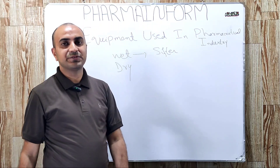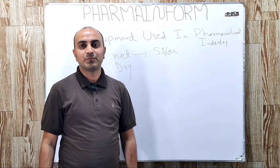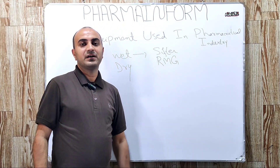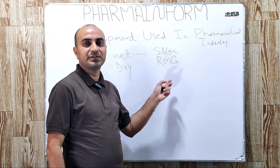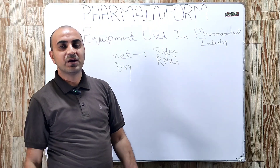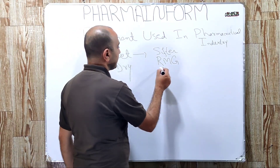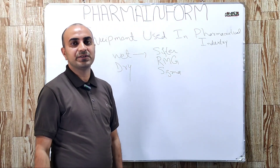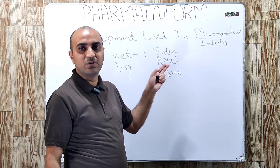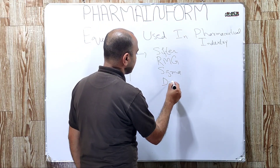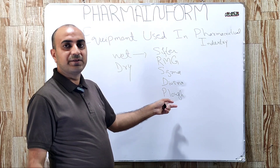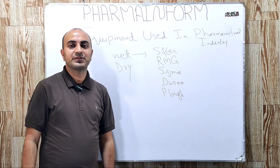The next step is the pre-mixing step. For pre-mixing, any type of blender can be used, but for wet granulation we usually use a rapid mixing granulator. The next step is the kneading or wetting step. For kneading or wetting, the rapid mixing granulator is commonly used, but if you want a low shear mixer, you can use a sigma mixer. The sigma mixer can be used for the kneading step or for pre-mixing. Other equipment such as the diosna mixer and plow mixer are also examples used for the kneading step.